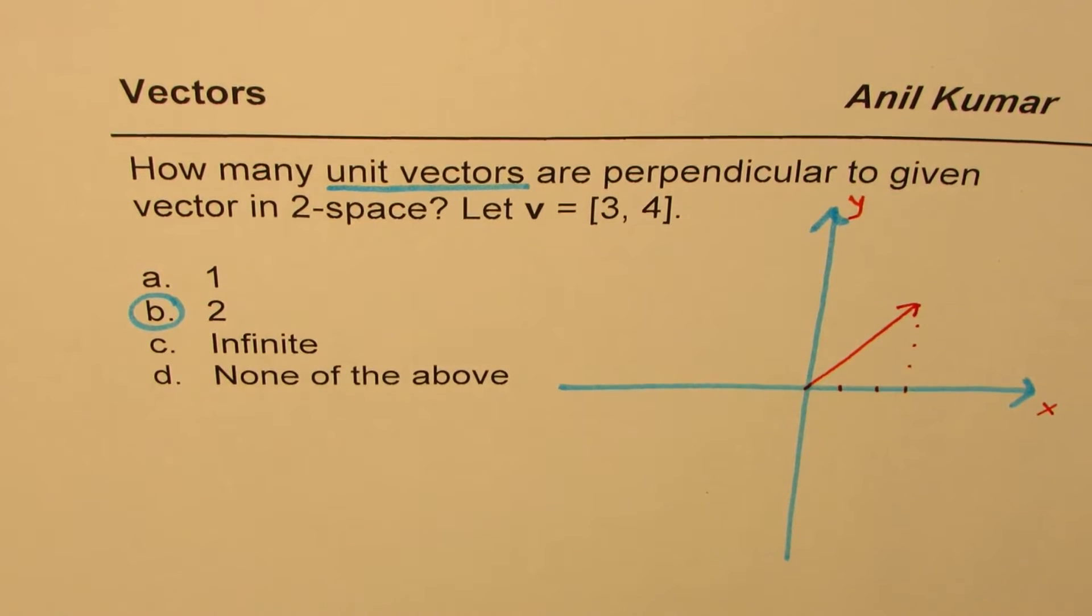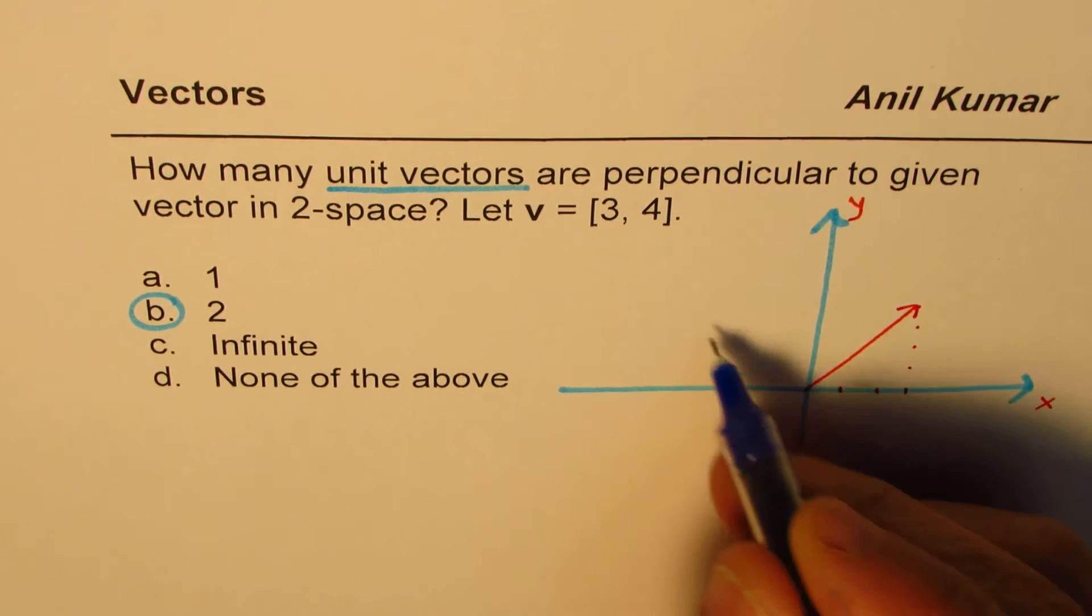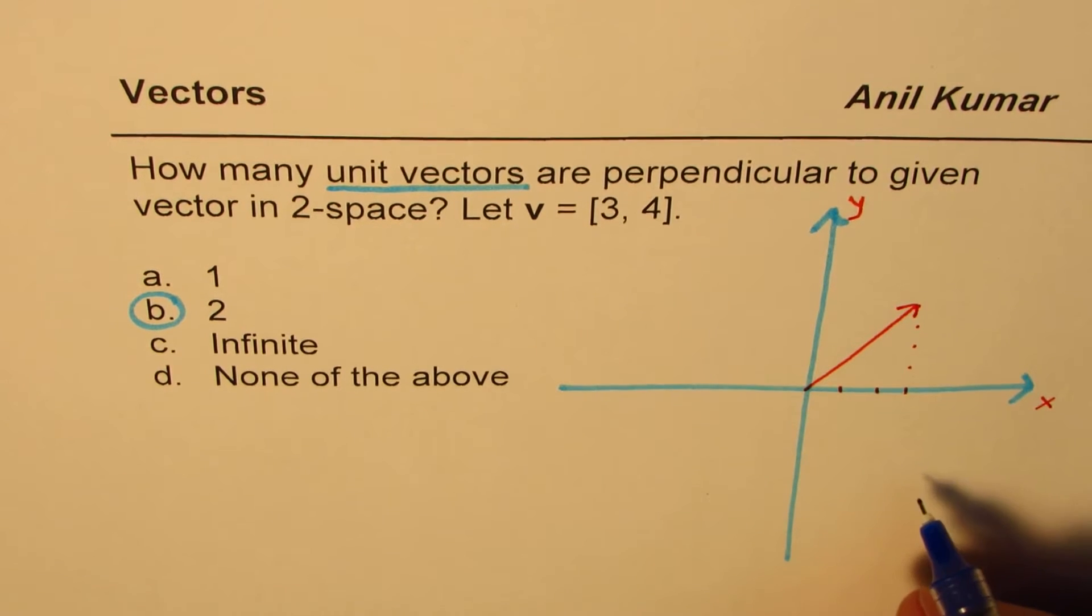Any vector which is perpendicular to this should be like what? That vector will be kind of like this or like that. These are two choices.